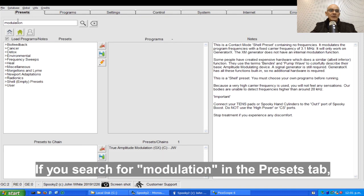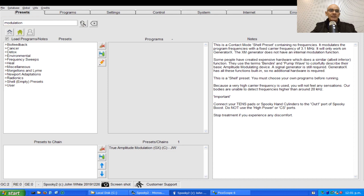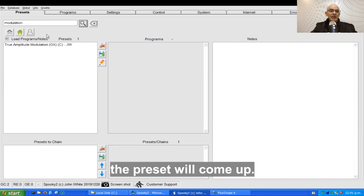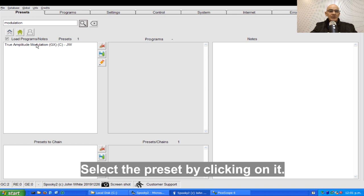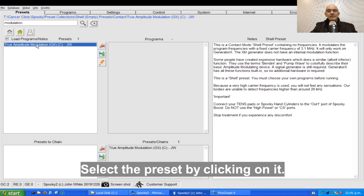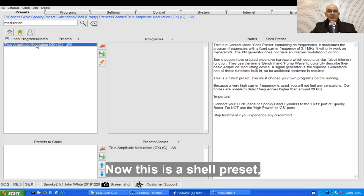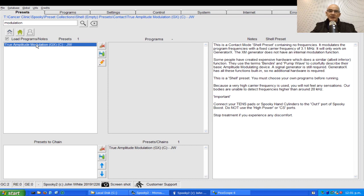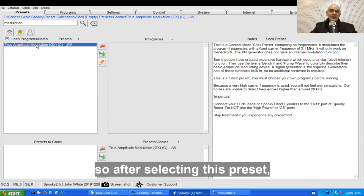If you search for modulation in the Presets tab, the preset will come up. Select the preset by clicking on it. Now this is a shell preset, so after selecting this preset you must load programs into it.